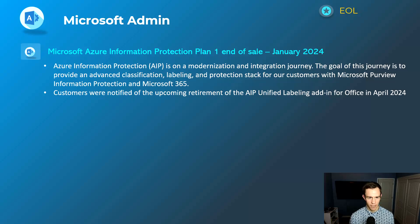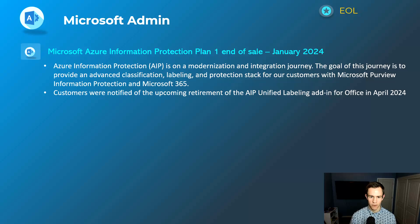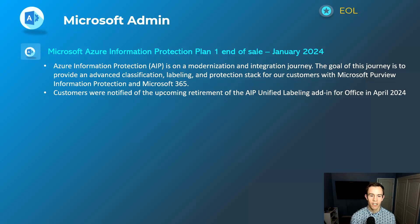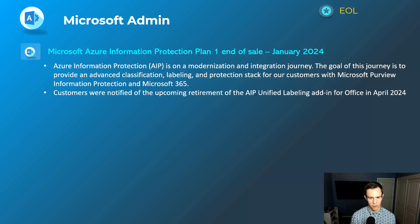Last announcement for the admin section is the end of life for Azure Information Protection Plan 1. Many of us may have been using that for labeling in our tenant — labeling documents or applying encryption to emails. Just note that's going end of life. The modern experience with Purview and information protection is included with many Microsoft 365 base plans — linked in the blog. If you have this subscription plan, it will go end of life at the end of April, and you'll need to transition if you rely on information protection services.